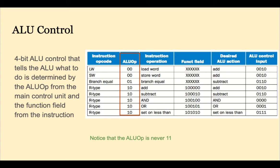The ALU op from the main control unit to the ALU control is 00 for a load store, 01 for a branch, and 10 for an R-type instruction.